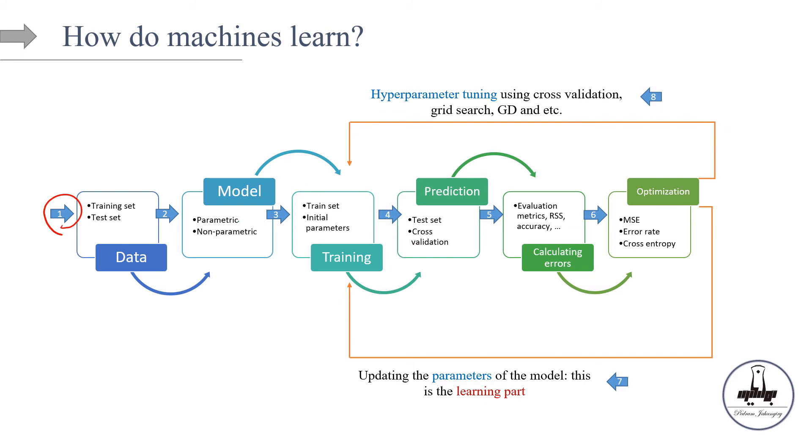Then, if the model has any hyperparameters, then the hyperparameters will also be updated and optimized using cross-validation, grid search, or even gradient descent for continuous hyperparameters. All right, that's it. Finally, we know how the machines actually learn. Isn't it exciting?